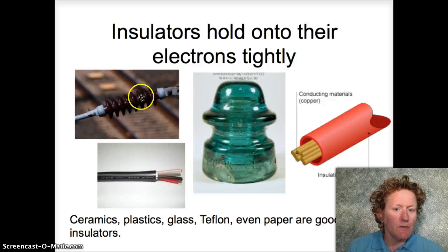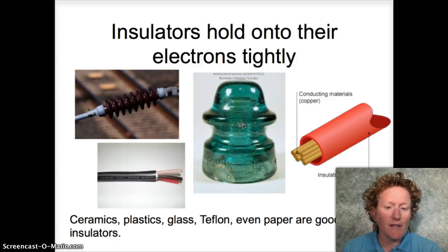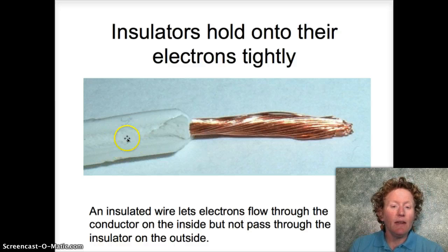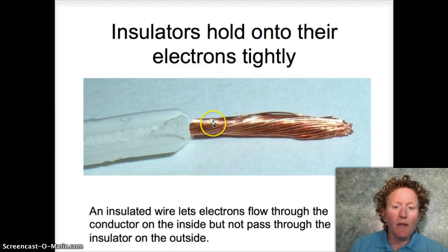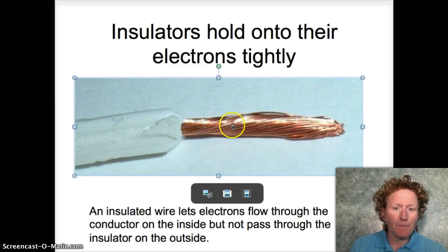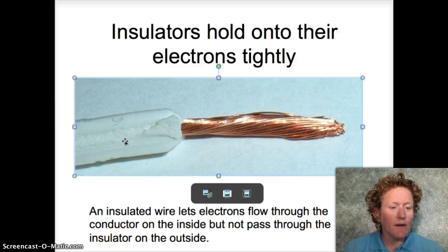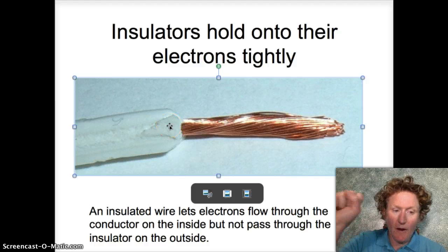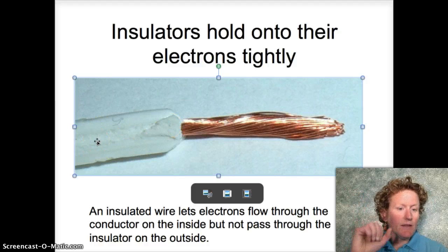Insulators can be things like ceramics, plastics on the outside of wires, glass, Teflon, even paper. An insulated wire has the best of both worlds — you've got a good conductor inside. The electricity flows through the copper, and the insulator covering keeps the electricity in the wire and prevents it from getting out where it shouldn't be. If you grab onto the insulation, the electrons won't get into you — they'll stay in the copper wire.